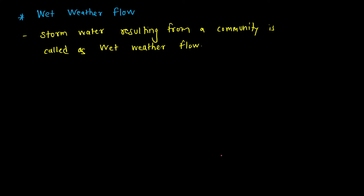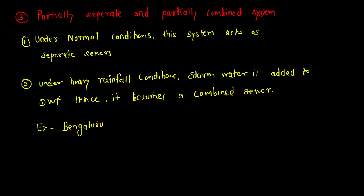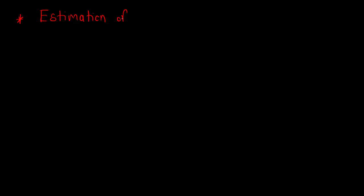There is another discharge called wet weather flow. Wet weather flow refers to rainwater collected nearby — that rainwater is called storm water or wet weather flow. Both dry weather flow and wet weather flow must be conveyed by sewers, forming the sewerage system. There are three types of systems: combined, separate, and partially combined and partially separate.